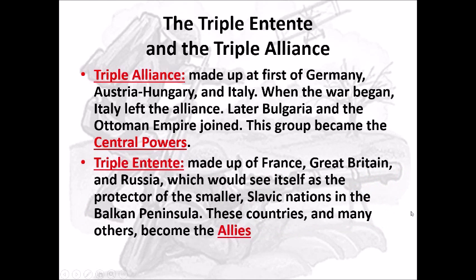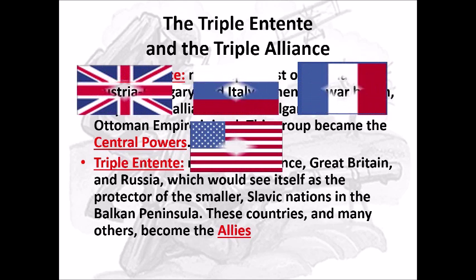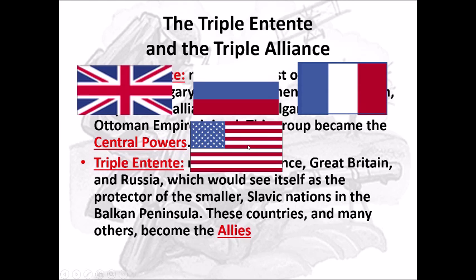Now the Triple Entente is made up of France, Great Britain, and Russia. It saw itself as the protector of smaller Slavic nations in the Balkan Peninsula. Slavic is a type of ethnicity, and Russians are also Slavic, so when they saw other Slavic people being hurt, they thought it was their duty to rescue them. These countries and many others would become the Allies. One way to remember the Triple Entente is that the flags of the major countries — the UK, Russia, and France — are all red, white, and blue. The United States would also join the Allies, not at first, but later on.